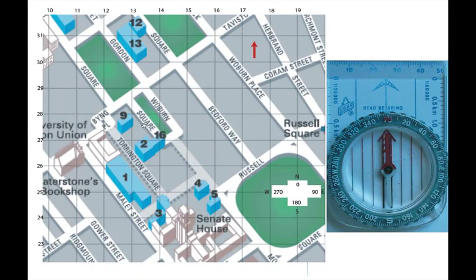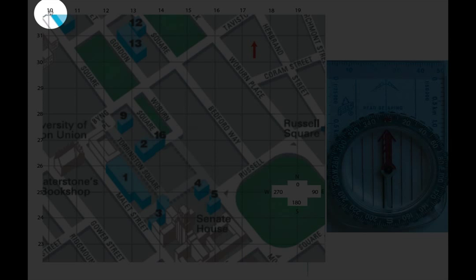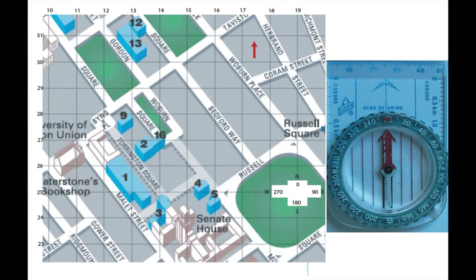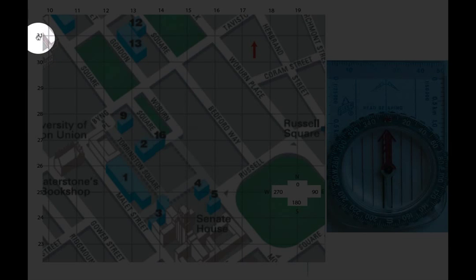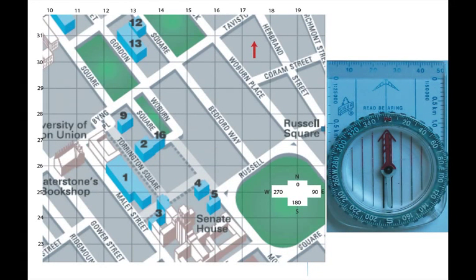You'll notice at the top of the page there is a sequence of numbers increasing from left to right, from 10 through to 19. If you align those with the compass, you'll note they are increasing towards the east, and these are termed Eastings. This series of numbers from 23 up to 31 are increasing up towards the north, and these are called Northings. We use a combination of Eastings and Northings to give us grid references.